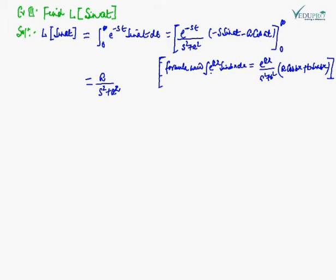Next, we are going to find the Laplace transform of sin(at). Similar process: L[sin(at)] = integral from 0 to infinity of e^(-st) sin(at) dt. On integration this gives: [e^(-st) / (s² + a²) × (−s sin(at) − a cos(at))] from 0 to infinity.